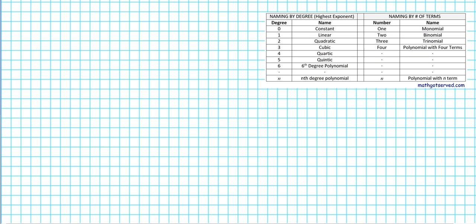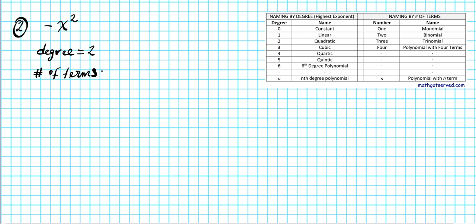Example two: negative x squared. The degree is 2, since that's the only exponent present. The number of terms is exactly one. Going back to the chart, a degree of 2 is quadratic, and one term is a monomial. So the name of this polynomial is a quadratic monomial.